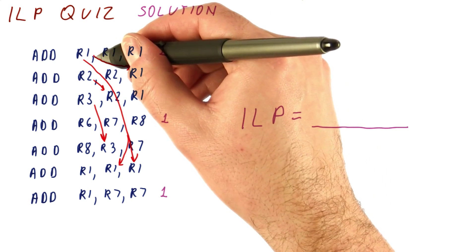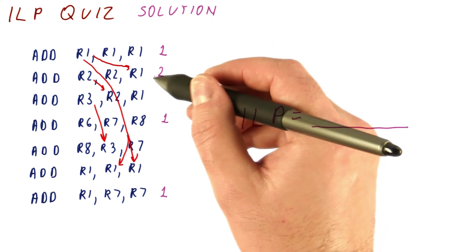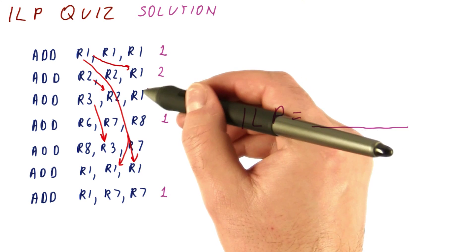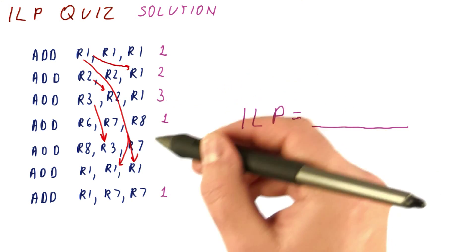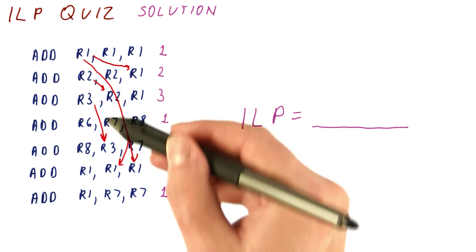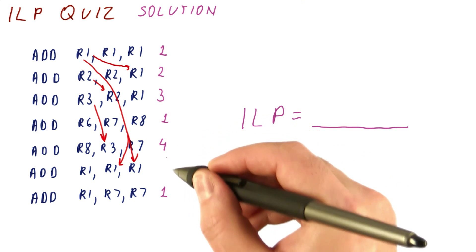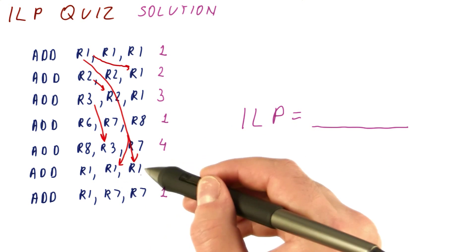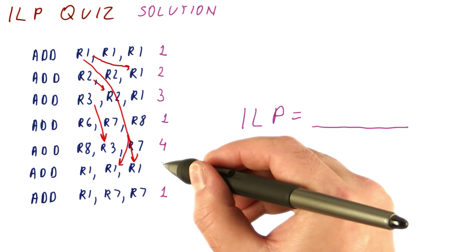Now this instruction only depends on instruction that is done after cycle one, so this can be done in second cycle. This one actually depends on instruction that is done in second cycle, so it will have to wait until the third cycle. This one depends on an instruction that is done in the third cycle, so this is going to be executed in the fourth cycle. This one can actually execute in the second cycle. It depends on the instruction that executes in the first cycle, so it can be done in the second cycle.